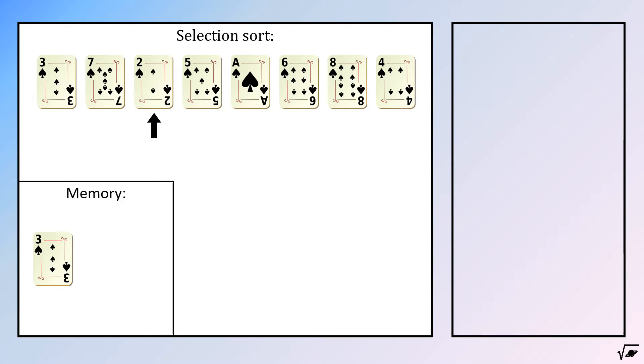But when the third card, number 2, is compared to the one in memory, we will find a smaller number. Thus that one will be placed into memory. This process will be continued to the last number in the sequence.